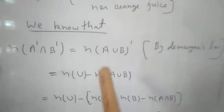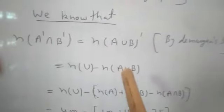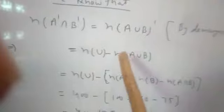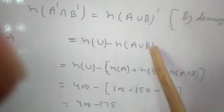And we know how we find out a complement: U minus that particular subset. So, complement of A union B is equal to n(U) minus n(A union B).